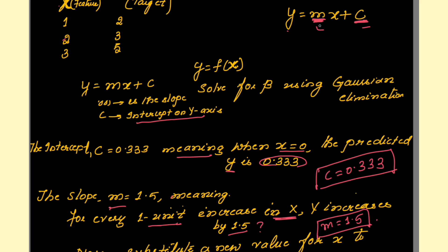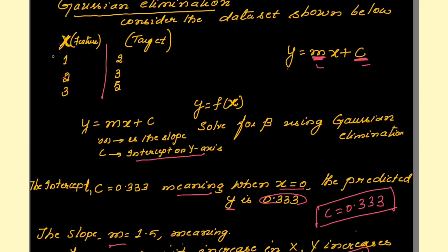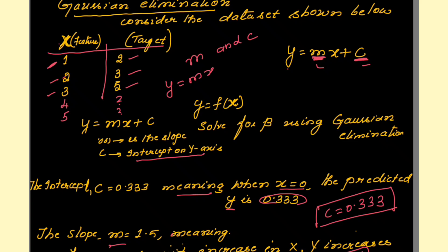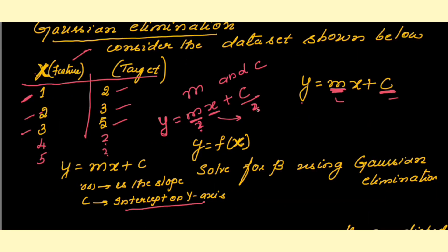If we know the values for m and c — that is the slope and the intercept on the y-axis — then we can easily predict the values in the given problem statement. In the problem statement, one column has features and the other is the target. If x is 1, the target value is 2; if x is 2, the target value is 3; if x is 3, the target value is 5. To predict the value for x = 4 or 5, we need to know m and c, because y = mx + c, where x is the feature and y is what we need to predict.